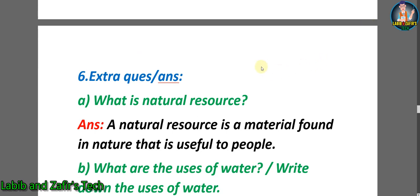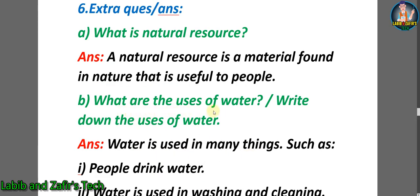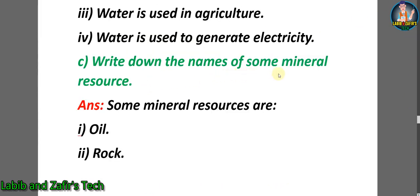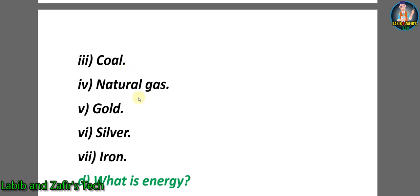Extra question answers. a) What is a natural resource? Answer: A natural resource is a material found in nature that is useful to people. b) What are the uses of water? Answer: Water is used in many things — number 1: people drink water; number 2: water is used in washing and cleaning; number 3: water is used in agriculture; number 4: water is used to generate electricity. c) Write down the names of some mineral resources. Answer: Some mineral resources are oil, rock, coal, natural gas, gold, silver, and iron.